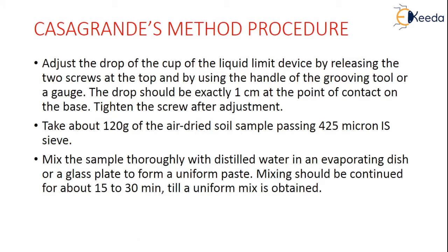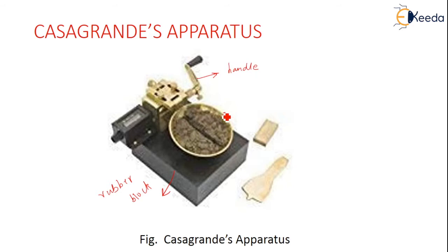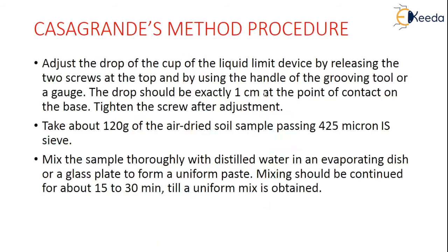First, we have to adjust the drop of the cup. Adjust the drop of the cup of the liquid limit device by releasing the two screws at the top and by using the handle of the grooving tool and a gauge. The drop should be exactly one centimeter at the point of contact on the base, then tighten the screw after this adjustment is done.